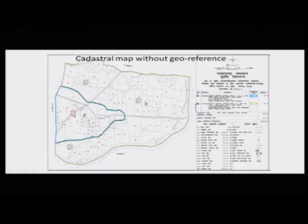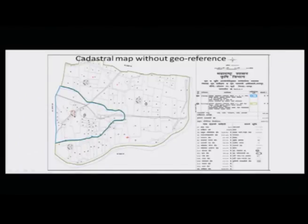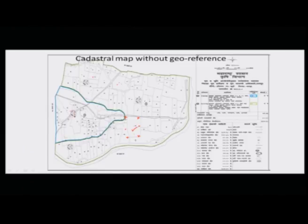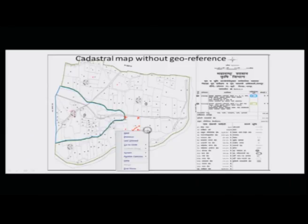Now how was this map prepared? These maps were prepared in the initial stages using a survey technique called chain survey. They would keep one chain, measure it out, take the direction, and establish references. The references used were pillars or stones kept at the corners of each agriculture plot. From those corner pillars, the adjacent farmer would place his own pillar and start measuring his area. This is how rudimentary plain table surveys were done to prepare these maps.